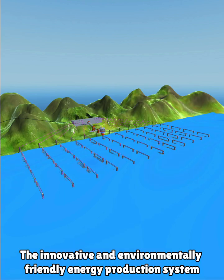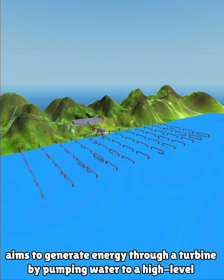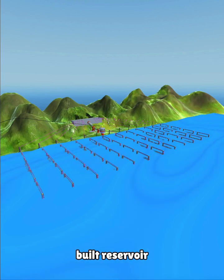The innovative and environmentally friendly energy production system, equipped with 100 pieces of VIV (Vortex-Induced Vibrations) devices, aims to generate energy through a turbine by pumping water to a high-level built reservoir.